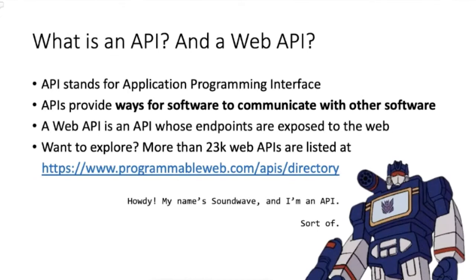A web API is just a type of API where the endpoints are available on the web. There are lots of web APIs — it's the most popular type nowadays. Programmable Web has a directory where you can browse them. There are more than 22,000 to 23,000 listed, and there are probably even more, including lots of private APIs. Chances are you're going to document a web API in the future.